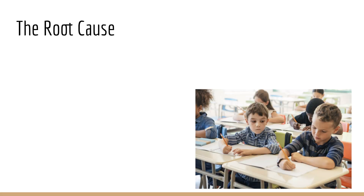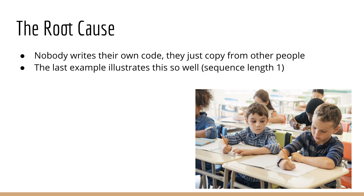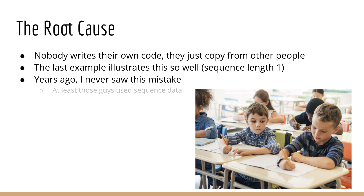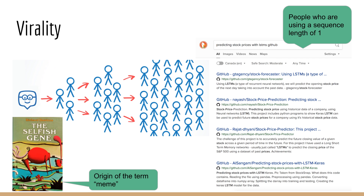So what is the root problem of all this? Nobody ever writes their own code — all you have are people who copy their code from other people. A few years ago, I never saw the sequence-length-of-one mistake. Most of the crappy blogs, courses, and GitHub accounts were all using the same code, which at least used a sequence as input. Recently, some beginner decided to make an LSTM with a sequence length of one, all of these other beginners copied the first beginner, and now you have a ton of GitHub accounts and Udemy courses with this exact same mistake. This is like a virus that spreads, just like any viral video or news article on the internet — it captures some part of the human imagination that causes it to spread like a meme.